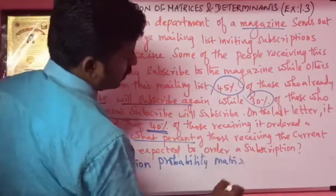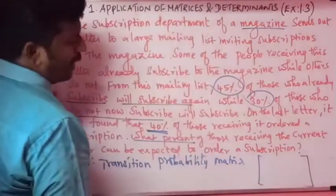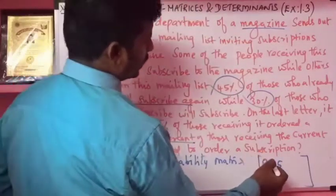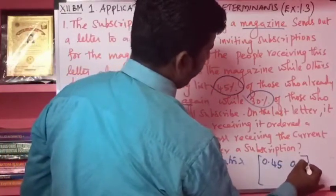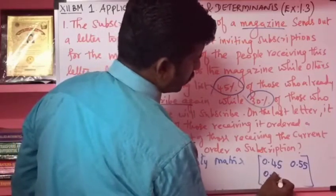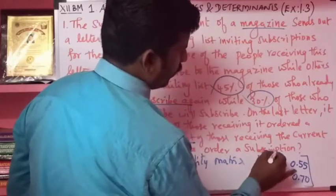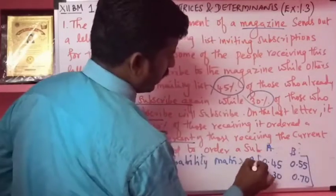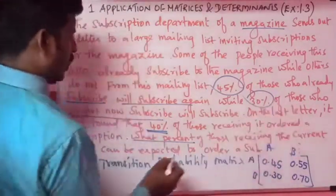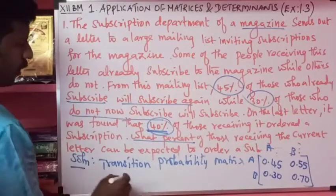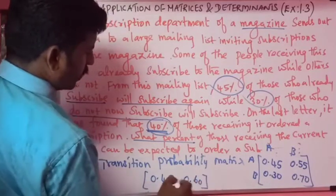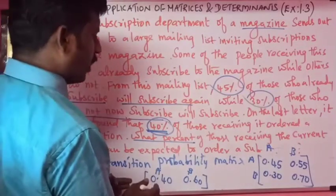Now I am going to write the transition probability matrix. The 45 percent who already subscribe will subscribe again, so 0.45, and the remaining 0.55. Then 30 percent who do not subscribe will subscribe, so 0.30, and the remaining 0.70. We label states a and b. On the last letter it was found that 40 percent subscribed, so a = 0.40 and the remaining b = 0.60.